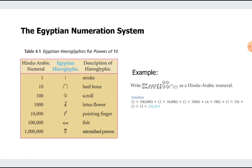Okay, now this is a bit of a larger number. So we have 2 fishes, that's 100,000. So 2 times 100,000. 3 pointing fingers. So 3 times, that's 10,000. We have a lotus flower. Lotus flower means 1,000 times 2. And then 4 scrolls, that's 400. 1 heel bone, that's 10. And then 3 strokes. So that's 3. If you add them together, that's 232,413.